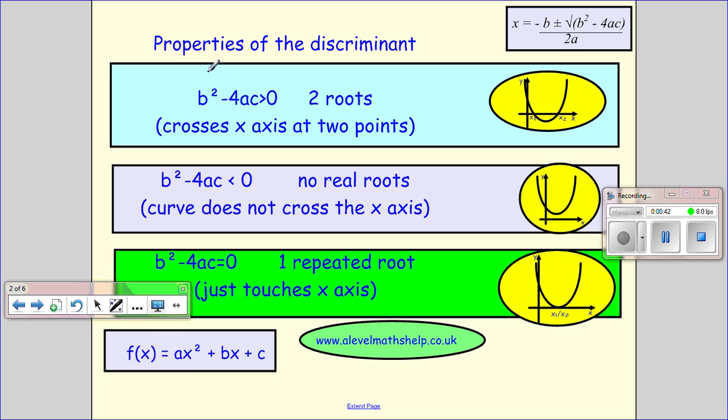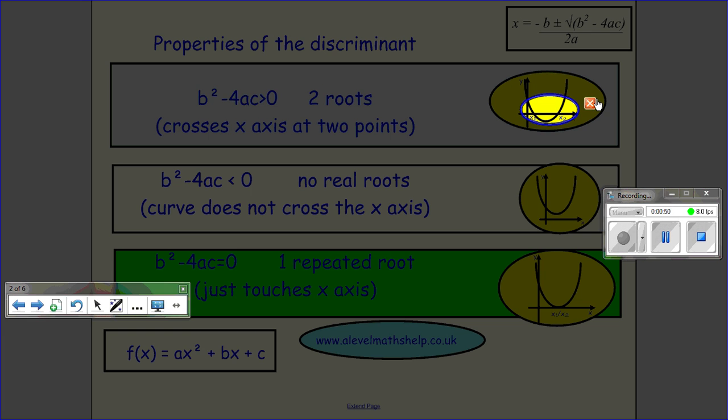And what we find is if b² - 4ac is bigger than 0, we have two real distinct roots. That means we cross our x-axis twice.